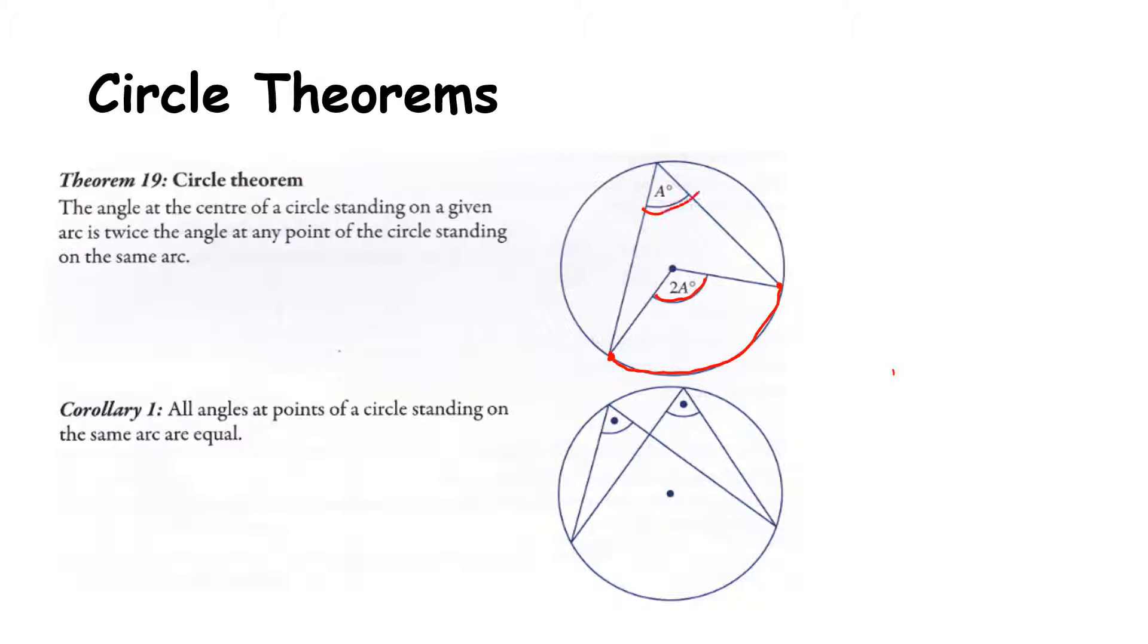So if we're given this angle at the circle, we're able to calculate the angle at the centre of the circle simply by doubling it. If you can remember from our first geometry video, a corollary is an add-on to a theorem, and this has Corollary 1, which states that all angles at points of the circle standing on the same arc are equal.